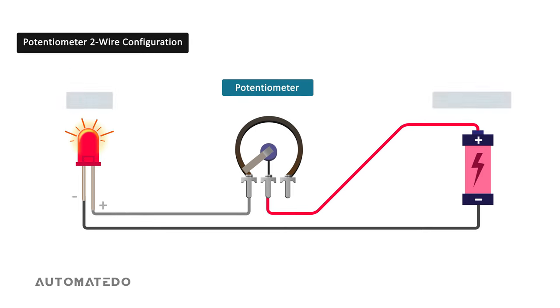If only the middle terminal or wiper and one of the outer terminals of the potentiometer are used, it will act as a variable resistor. In this application example, we use a potentiometer for brightness control. Here we connect the wiper to the positive terminal of the power supply and one end of the resistive element to the positive side of the LED.